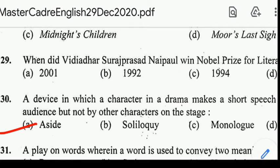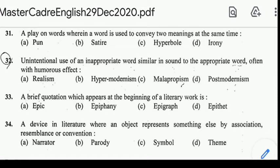Number 31: a play on words wherein a word is used to convey two meanings at the same time. Correct answer: option A, Pun.